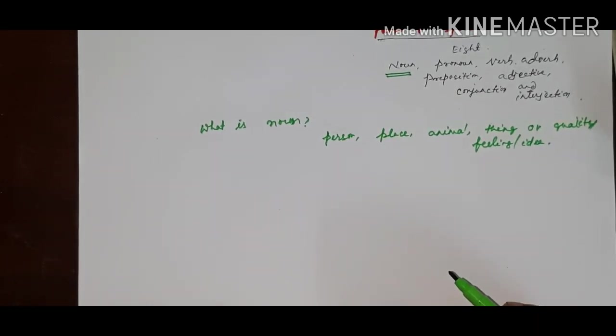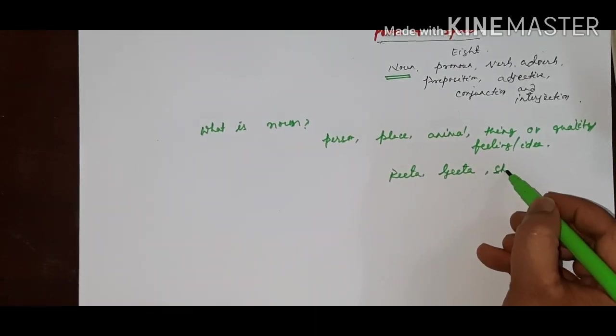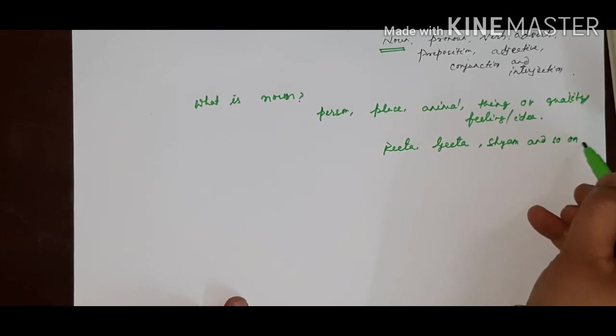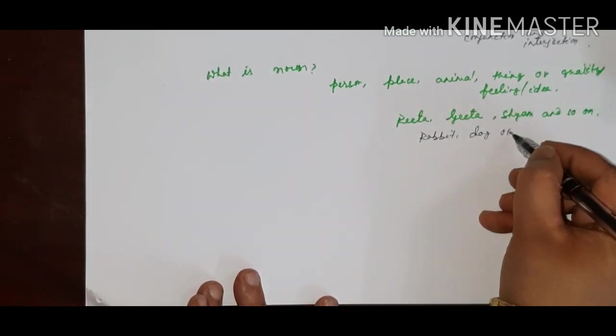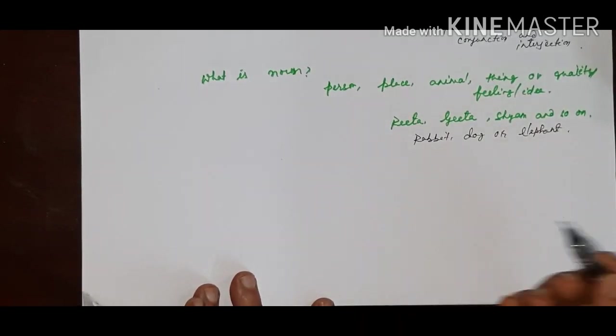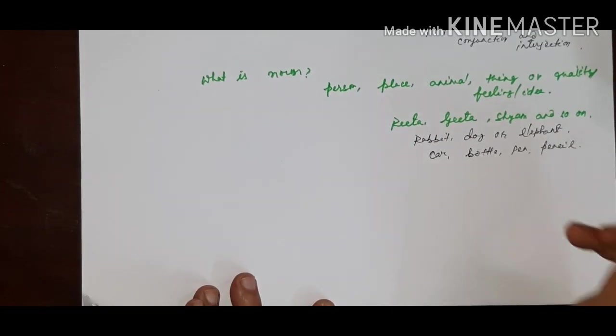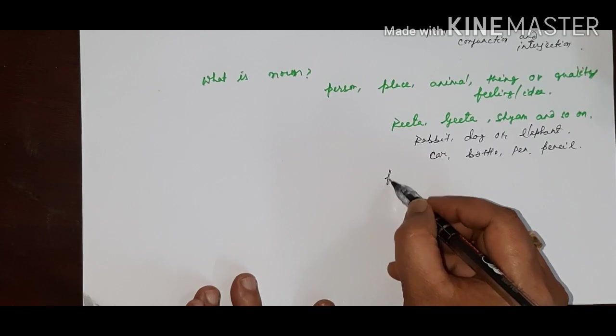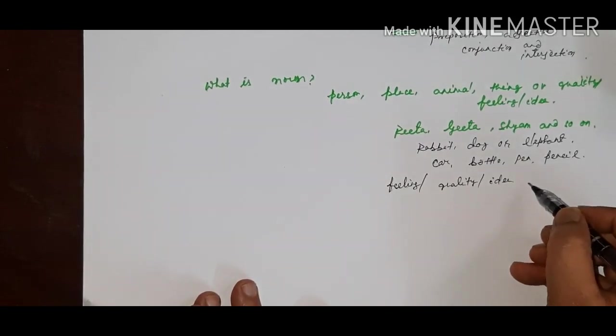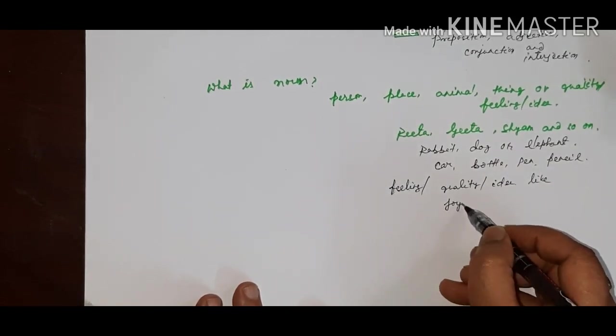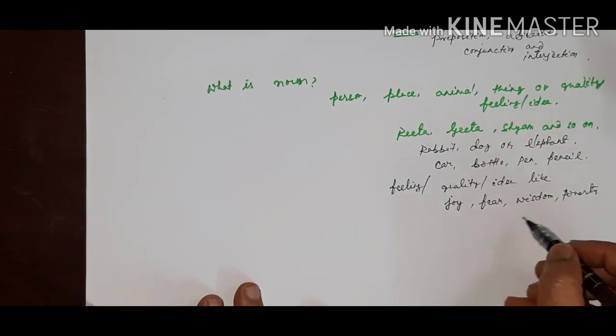Examples of noun: It could be the name of any person like Rita, Gita, Shyam, and so on. It could be the name of any animal like Rabbit, Dog, or Elephant. Things like Car, Bottle, Pen, Pencil. Or having feelings like quality or idea, like joy, fear, wisdom, poverty, and so on.